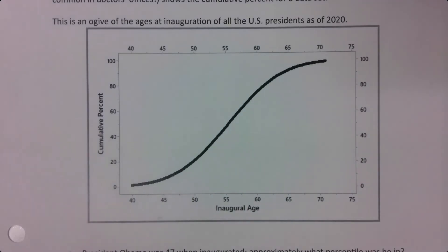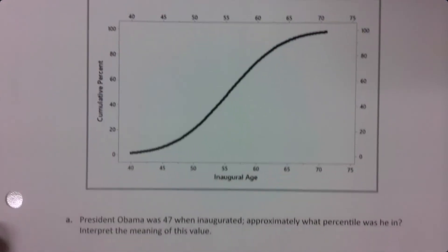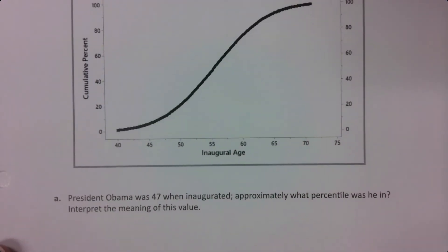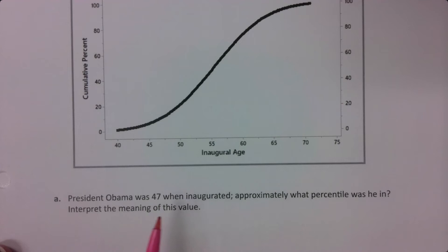A ruler or straight edge will be really helpful — it doesn't have to have measurements on it, but it will help you work with this graph. President Obama was 47 years old when inaugurated. Approximately what percentile was he in? Interpret the meaning of this value.